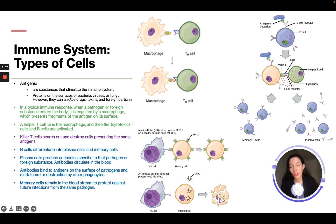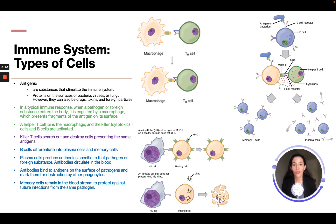Antigens are substances that stimulate the immune system. They are proteins on the surface of bacteria, viruses, or fungi; however, they can also be drugs, toxins, and foreign particles. An antigen is a particle on the surface of something — that is what we are fighting. It's not the actual organism itself, but rather the surface marker.